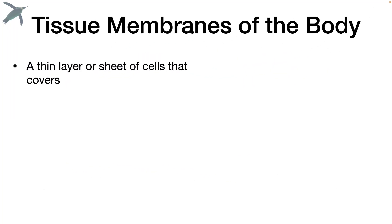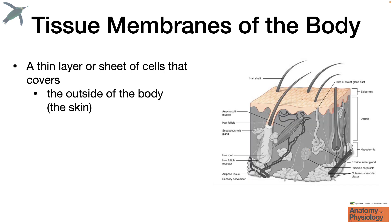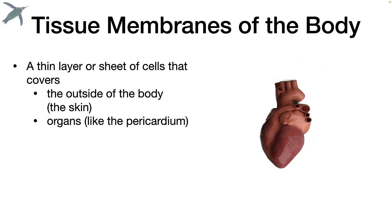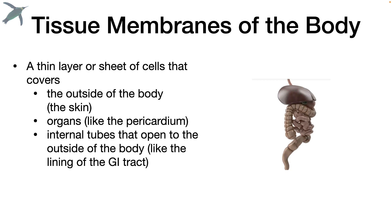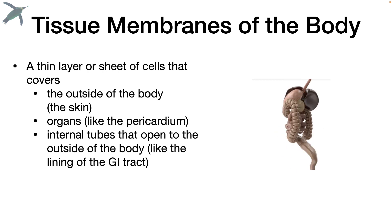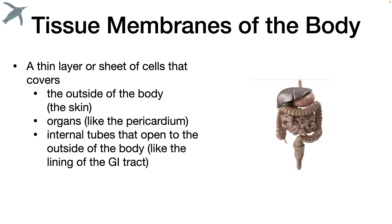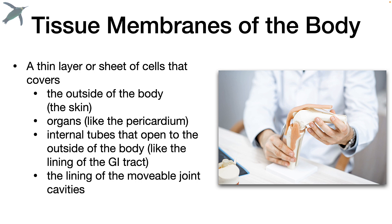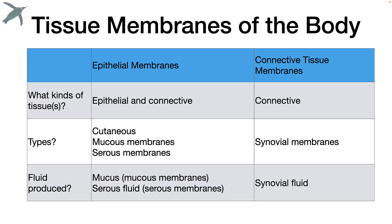Tissue membranes refer to a thin layer or sheet of cells that covers something. The things that we can cover include the outside of the body — the skin — organs like the heart. A covering of the heart would be the pericardium. Internal tubes that open to the outside of the body like the lining of the GI tract, and the lining of movable joint cavities. So this is an overview of the tissue membranes that we're going to be talking about.